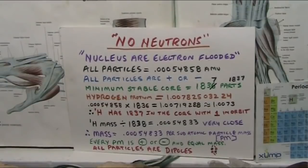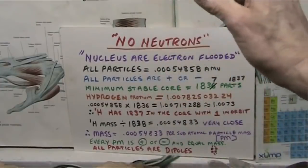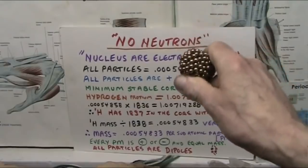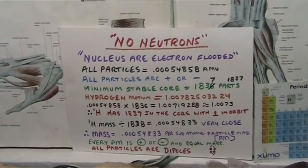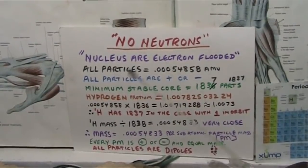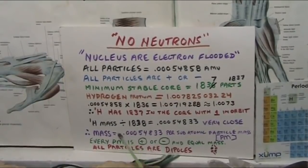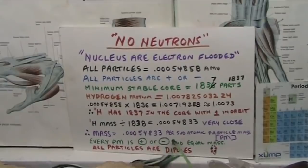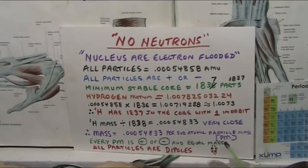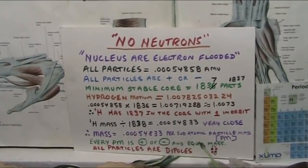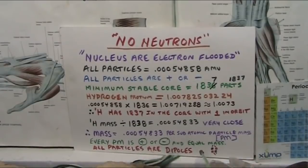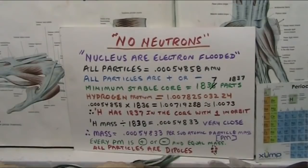Our atom action element: the atomic number increases one by one by one — those are your elements, simple as that. Every tiny molecule part in all of these is 0.0054833 per subatomic particle mass. I'm going to call them PMs — particle masses. Every particle mass is plus or minus, they're all equal — case closed. They're all particles but they're all dipoles. That's the key. I have seen these split, so don't tell me they can't split.